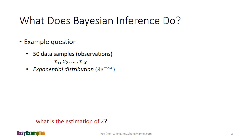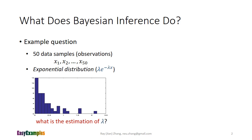First, what does Bayesian inference do? We answer this by showing our example question. In our example, there are a number of data samples, or observations, x1, x2, etc. We know that these data samples follow the exponential distribution. The histogram below shows the actual distribution of our sample data. Now the question we need to answer is: what is the estimate of lambda, the only parameter?